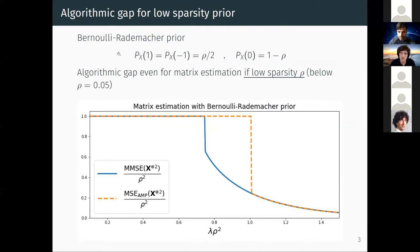For example, if you consider a Bernoulli-Rademacher prior and the sparsity of this prior is low enough, an algorithmic gap will appear for matrix estimation. This picture is important and I will come back to it later. First I will present another kind of prior that has been considered recently for matrix estimation.